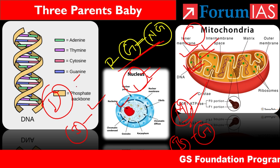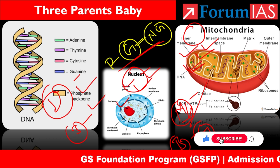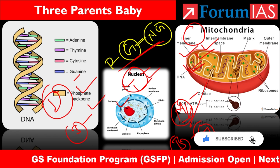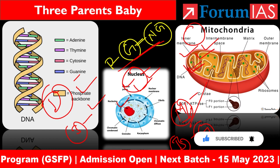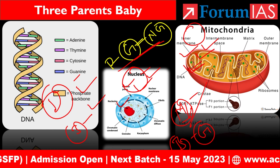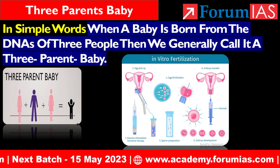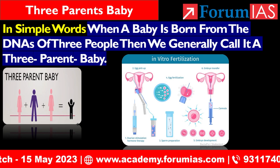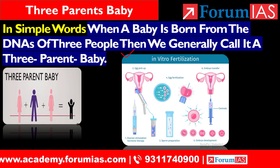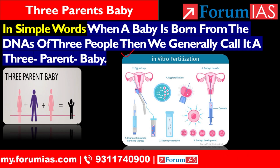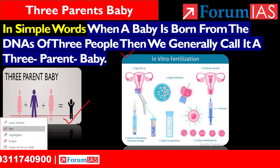So this is clear — we have understood DNA, genes, nucleus, and mitochondria and its basic functions. Now we are going to talk about the 3-parents baby and how it is created. In simple words, when a baby is born from the DNA of three people, we call it a 3-parents baby.